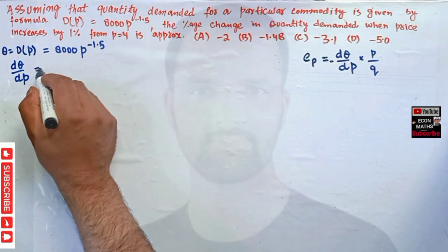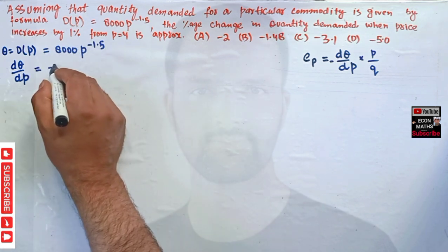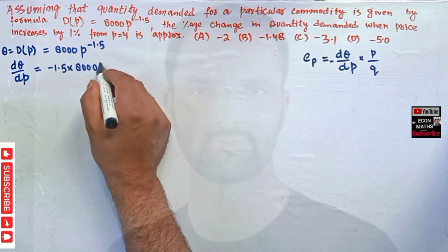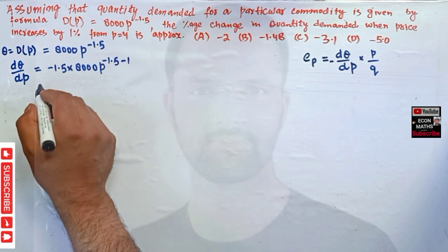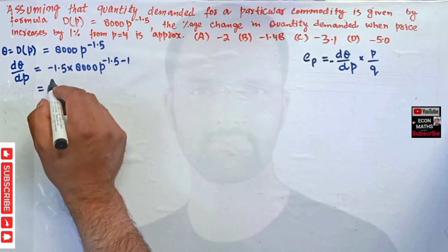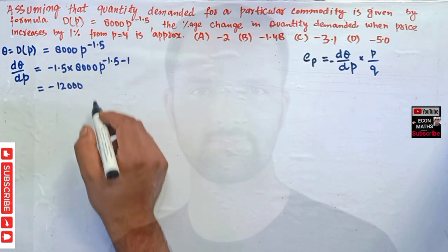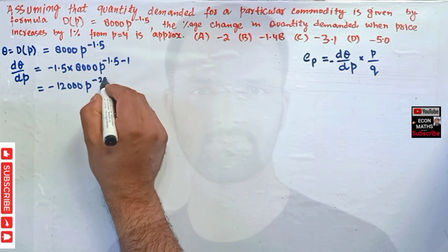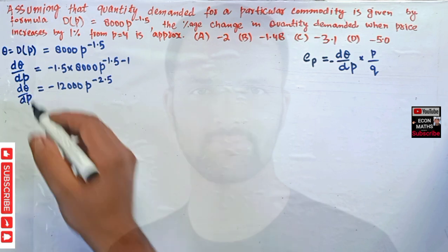Using the power function rule, the exponent becomes the coefficient: -1.5 * 8000 = -12,000. The new exponent is -1.5 - 1 = -2.5. So dQ/dP = -12,000 * p^(-2.5). This is our derivative, also called the slope.